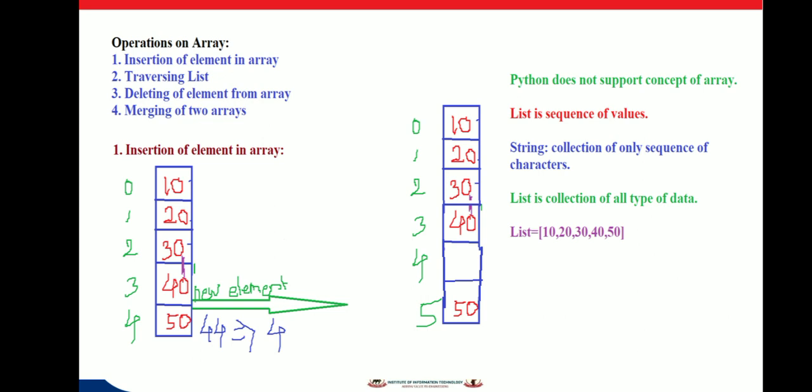We can implement arrays using Python programs. Python does not support the concept of arrays, but we can implement arrays using lists. A list is a sequence of values. String is also a sequence of values, but string is a sequence of characters. In the case of lists, the value can be any type.